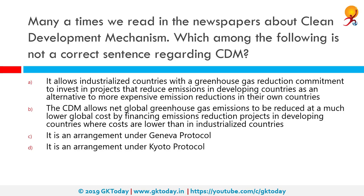We often read in newspapers about the Clean Development Mechanism. Which among the following is not a correct statement regarding this? The incorrect statement is that it is an arrangement under the Geneva Protocol — the Geneva Protocol is a war protocol and doesn't relate to clean development. The first two options are correct. The Clean Development Mechanism is one of the flexible mechanisms defined in the Kyoto Protocol, providing for emissions reduction projects which generate Certified Emission Reduction units that may be traded in emissions trading schemes.